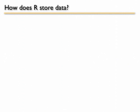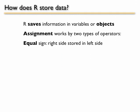So how does R store data? Well, at the most basic level, R saves information in variables or objects. Assignment is what happens when you put something into something else, and it works by two types of operators.